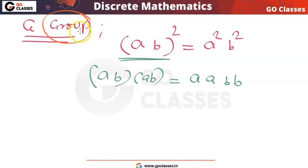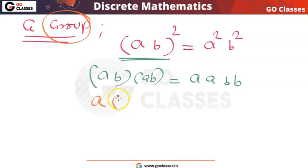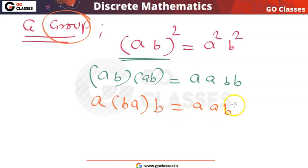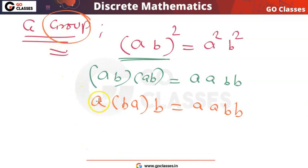Group is associative, closed, has an identity element, and has an inverse for each element. Applying associative property to ab·ab = aabb, we can now apply left cancellation — since in a group left cancellation is allowed, we can cancel the leading a from both sides.